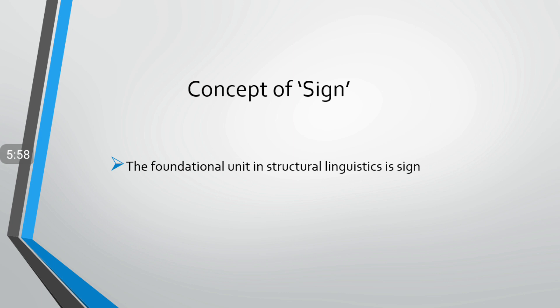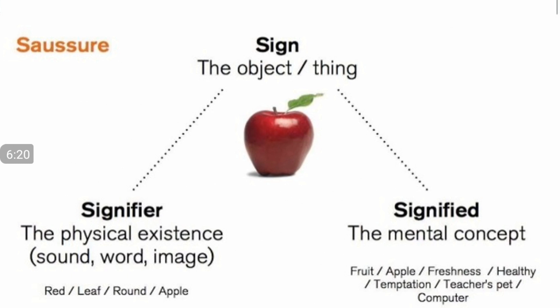It was Ferdinand de Saussure who put forward the concept of the sign. The foundational unit in structural linguistics is the sign. If we want to understand the structuralism approach, we need to understand the concept of sign. Ferdinand de Saussure says that a sign consists of two things: number one, the signifier, and number two, the signified. If I want the physical representation of any idea or concept, I need a sound, a word, or an image — this physical existence in the form of language is the signifier, and with it we express our ideas and mental activities.